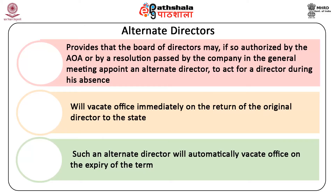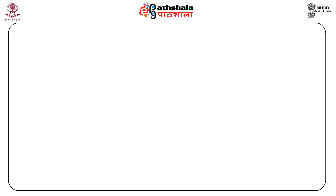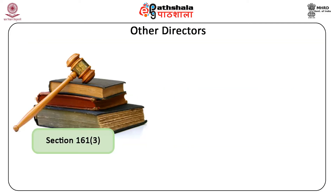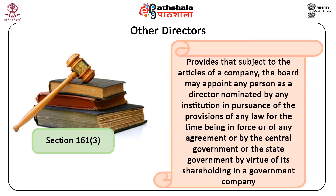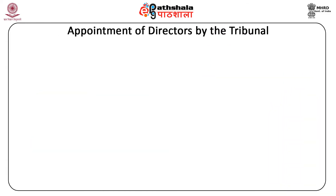Such an alternate director will automatically vacate office on the expiry of the term of the original director even if the latter has not returned. Other directors: Section 161, Subsection 3 provides that subject to the articles of a company, the board may appoint any person as a director nominated by any institution in pursuance of the provisions of any law for the time being in force, or of any agreement, or by the central government or the state government by virtue of its shareholding in a government company.